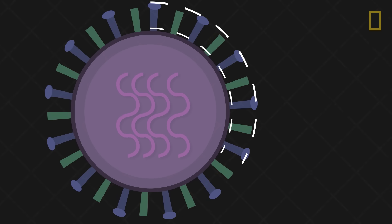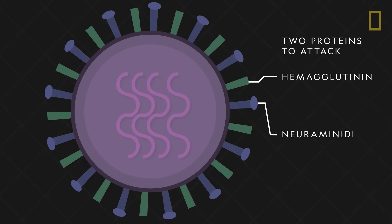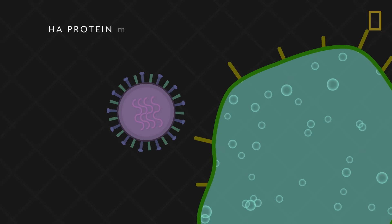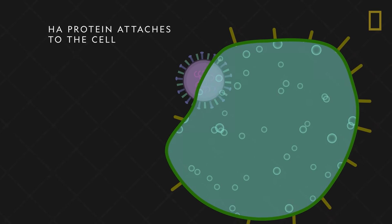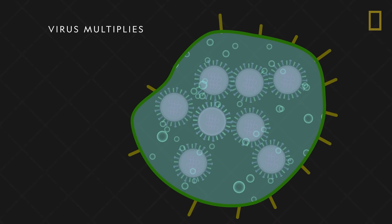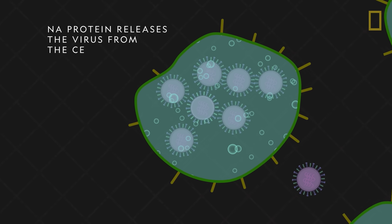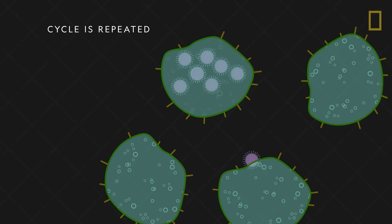The flu virus uses two proteins to attack its host: hemagglutinin and neuraminidase, or the HA and NA proteins. The HA protein attaches the virus to a cell and lets it in. Once the virus is inside, it multiplies. Then the NA protein cuts this viral swarm loose, sending it off to infect more cells.